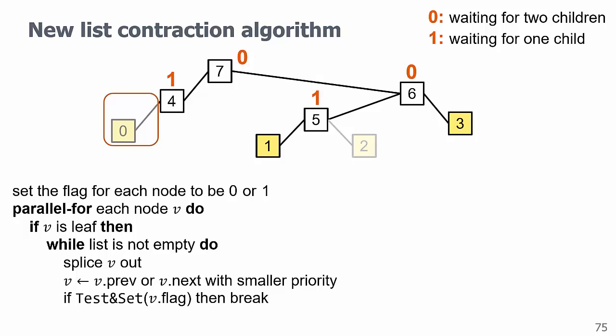Let's say 0 finishes next. It splices out and finds its parent. And this time, the test and set will fail because the flag is 1, so 0 takes over 4 and continues. And it will then test and set node 7, succeed, and quit.